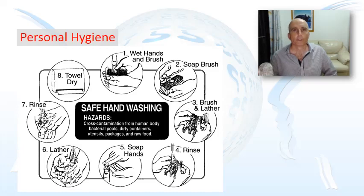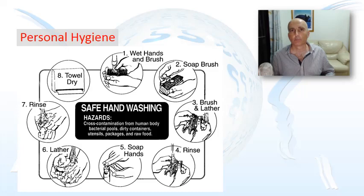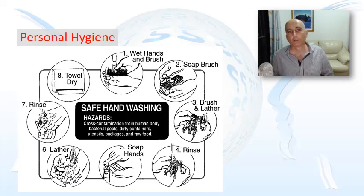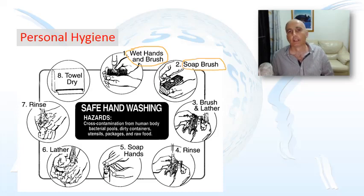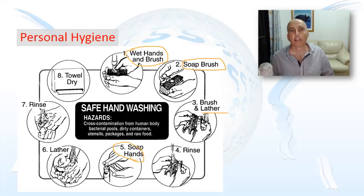Safe hand washing is so important in the commercial environment. When you go to work placement you will see basins that are separate, and the tap you turn on with either your elbow or a thigh. For correct technique, you'll find there's a brush — you wet the brush and your hands, then put soap on the hands and brush and scrub your nails to get rid of any contaminants. Once that's done, rinse your hands and the brush, then soap your hands and lather on both sides, rinsing and very importantly drying with a clean piece of paper towel.